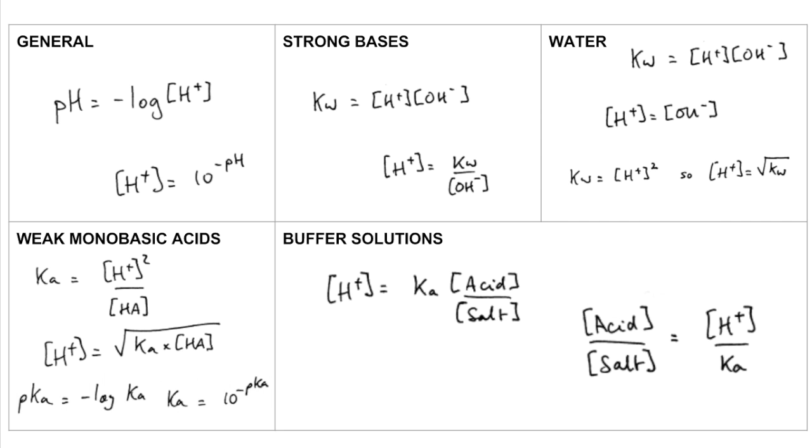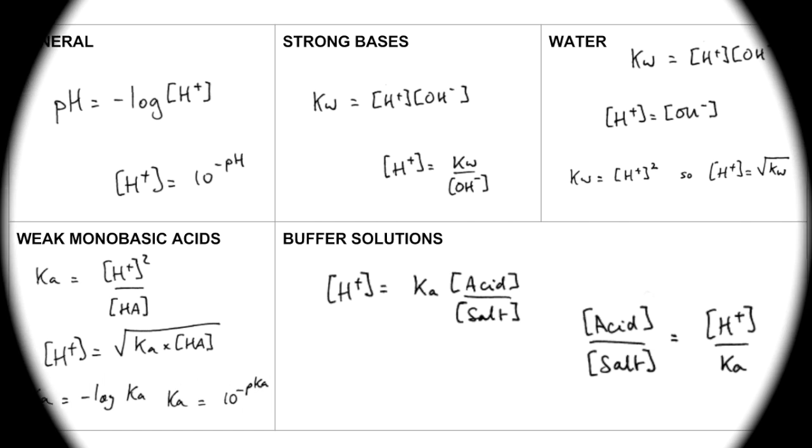You might also be asked to calculate the acid to salt concentration ratio. So all I've done there is rearrange. So I've got acid concentration over salt concentration. So you can see that equals the H plus concentration over KA.